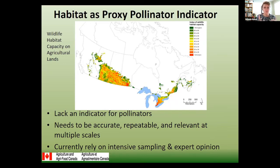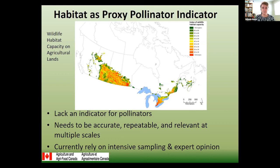We do recognize that these areas are really intensively used to produce food for humans, but we also have to understand that food for humans is also dependent on functional, resilient ecosystems around them. They are getting more and more degraded to the point where they are just not providing for things like pollinators. One of the things we're trying to do is use habitat as a proxy for pollinators. It's challenging to do baseline surveys — it's very intensive sampling and expert opinion is needed — so we are looking more and more to habitat assessment to tell us where our pollinators are.